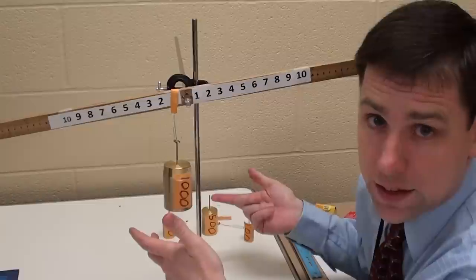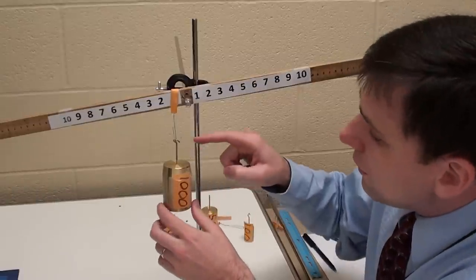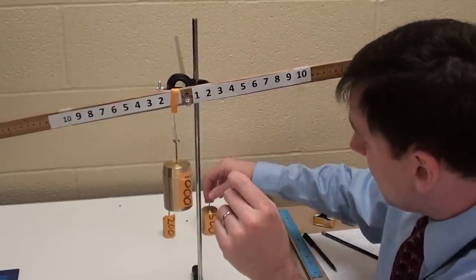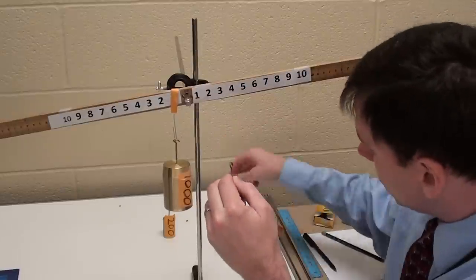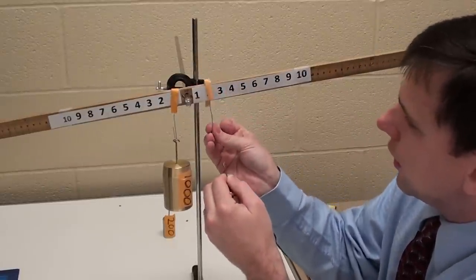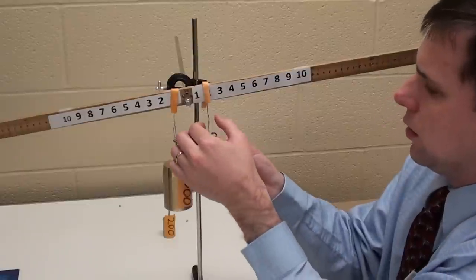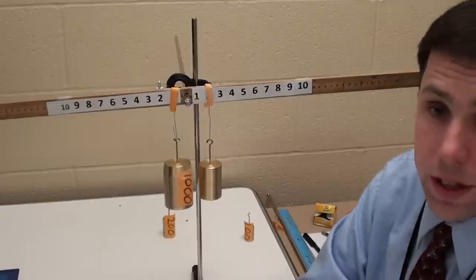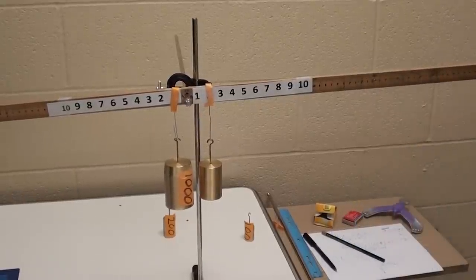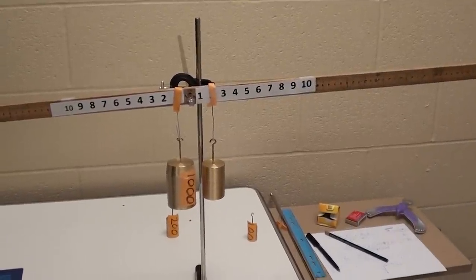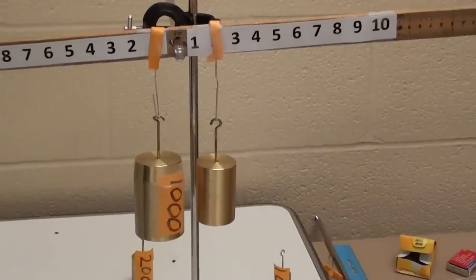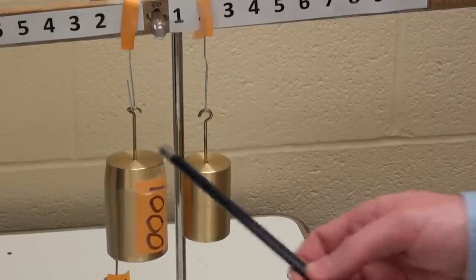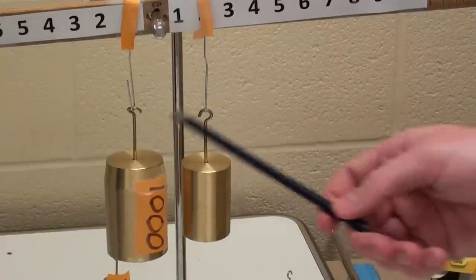Right now I have a thousand grams at the one centimeter mark, and I'm going to balance that. First I'm going to balance it using a 500 gram mass. I'm going to do that by putting it at two centimeters, and at two centimeters you can see those are in what's known as rotational equilibrium. The rod is not moving. So if you notice, the 1000 gram mass is twice as far away - I should say half as far away as the 500 gram mass.